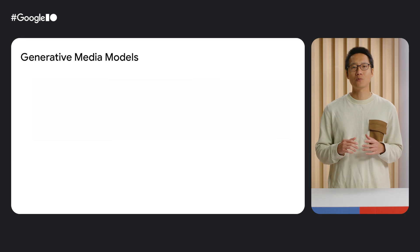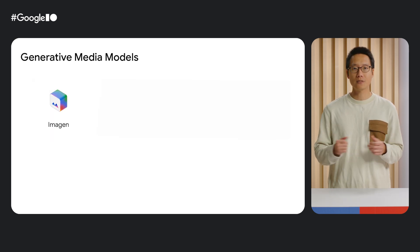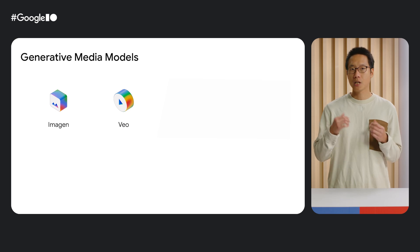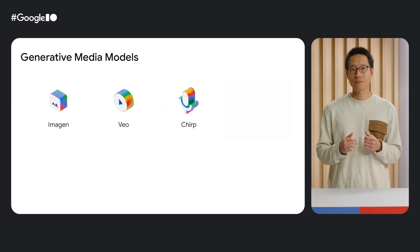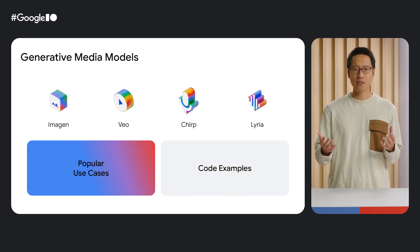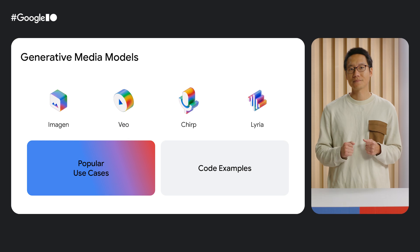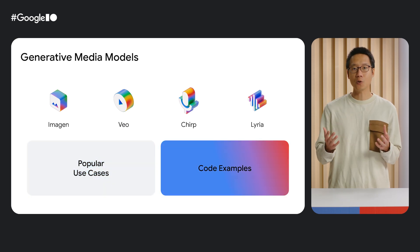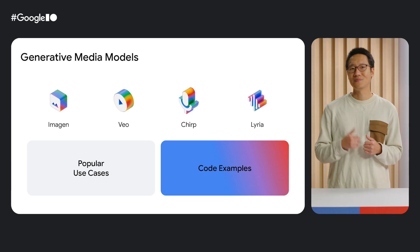In Google Cloud, we offer four gen media models: Imagen for image generation, Veo for video generation, Chirp for speech generation, and Lydia for music generation. For each model, I'll go through the popular use cases that many developers are leveraging them for, then talk about the technical details on how you can get started. Now let's dive into it.